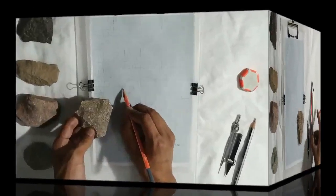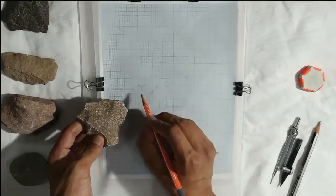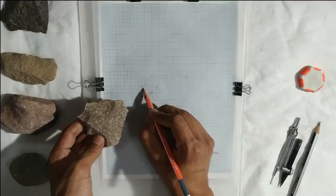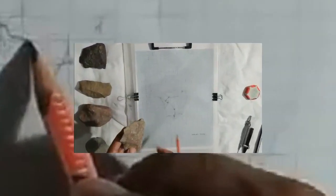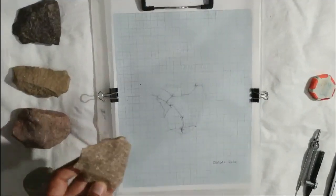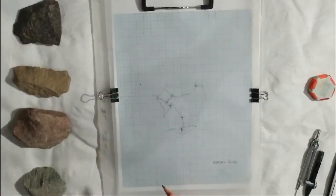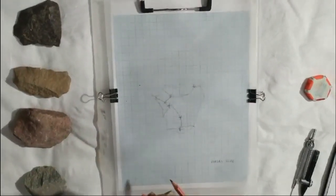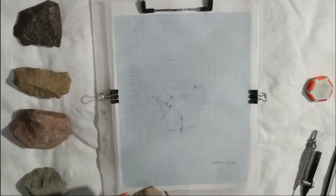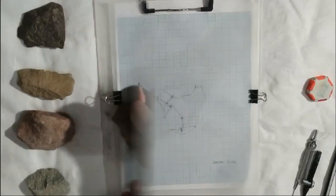After you have completed all the points, draw all the lines to complete the skeleton of the stone tool. Now that we have a skeleton, we will move towards representing the flake and the cortex.